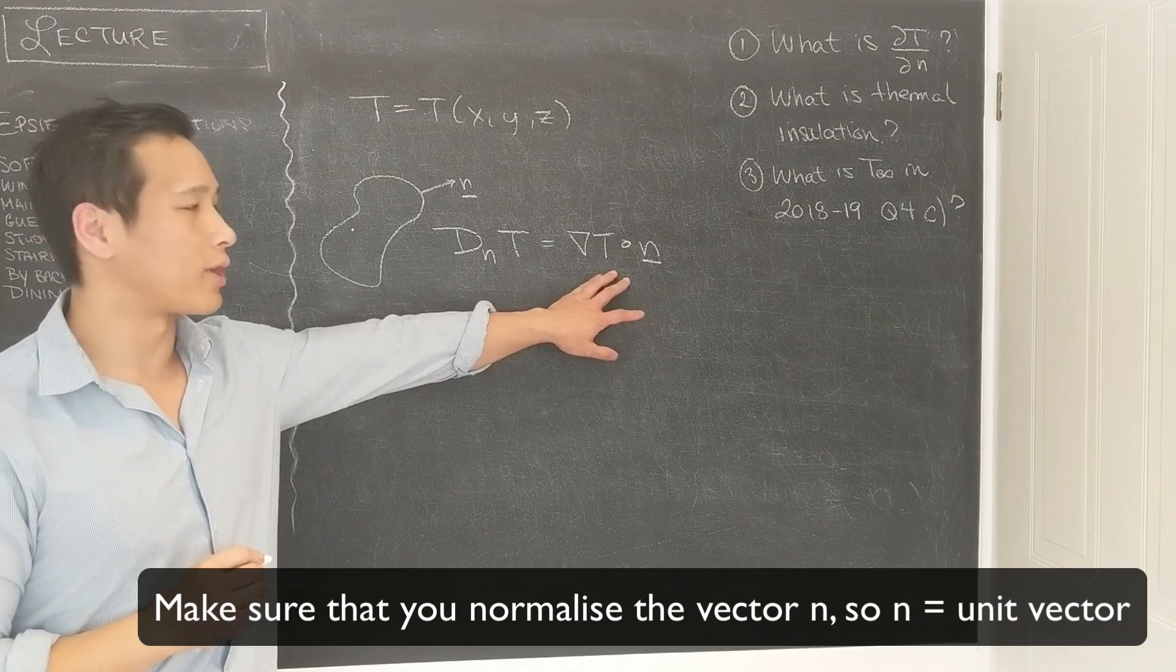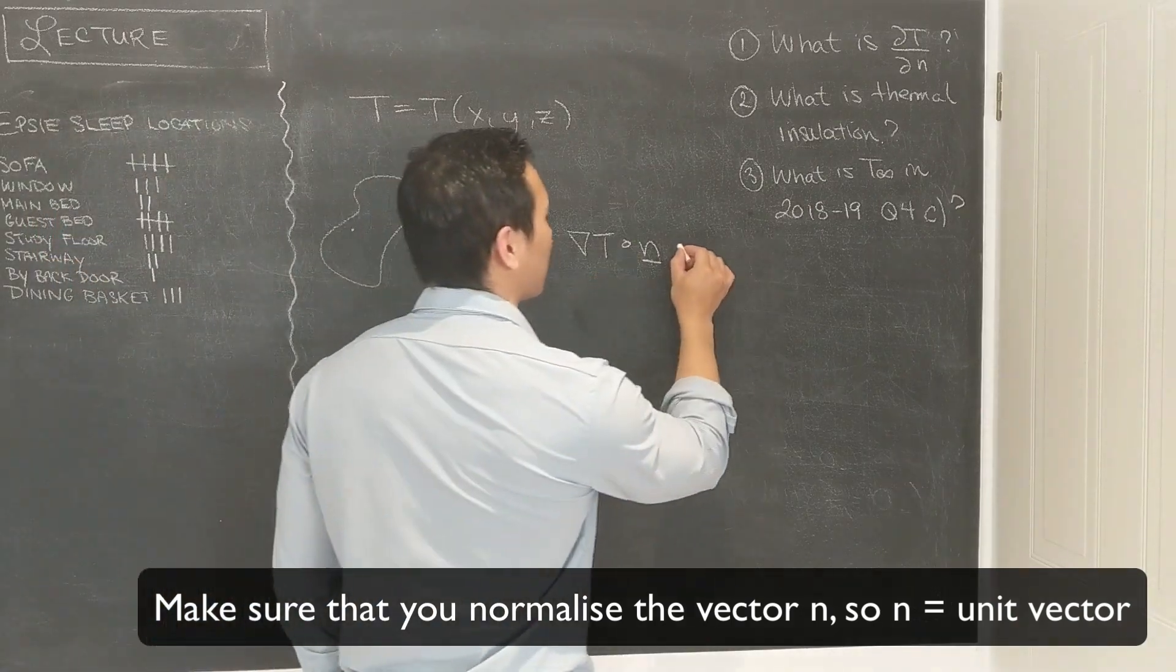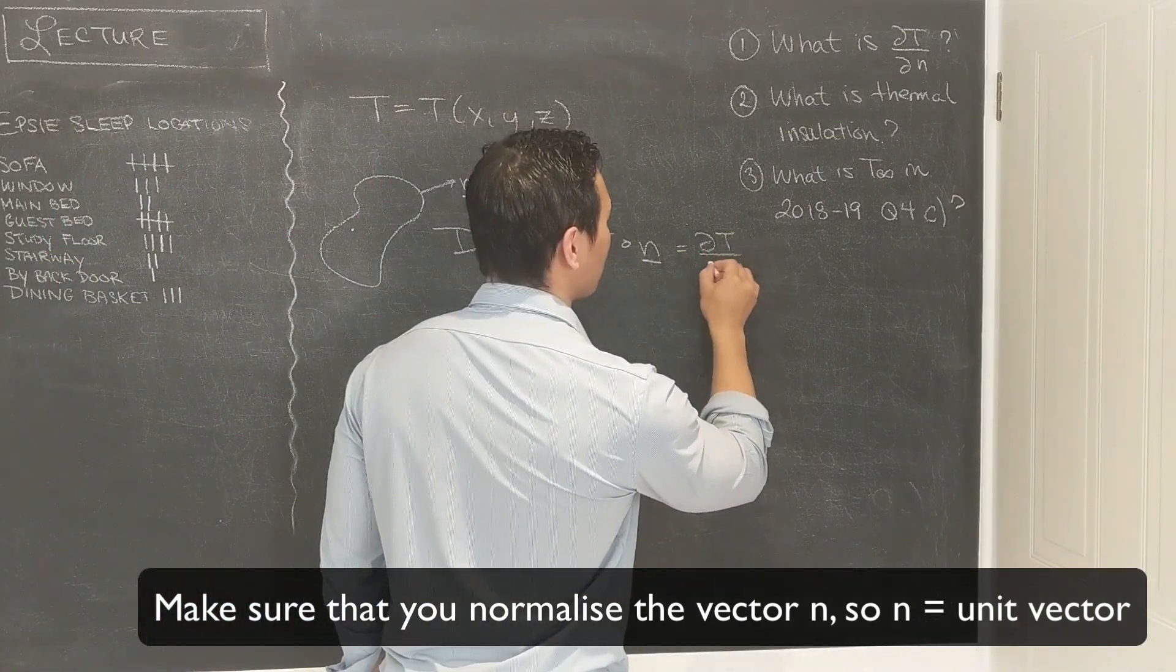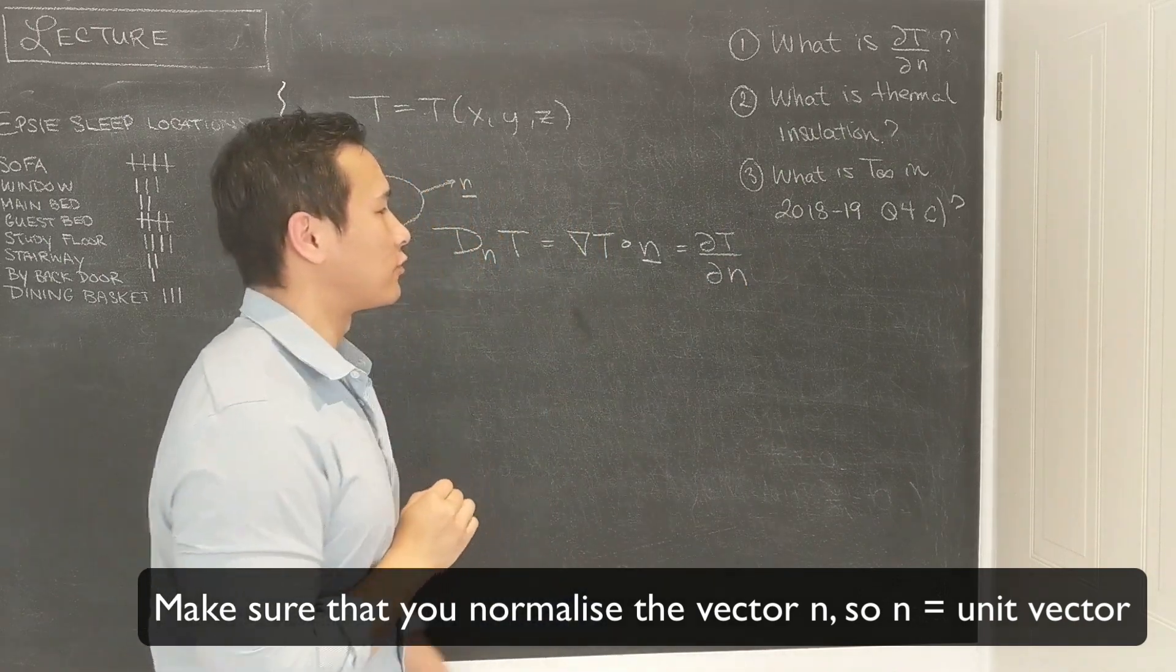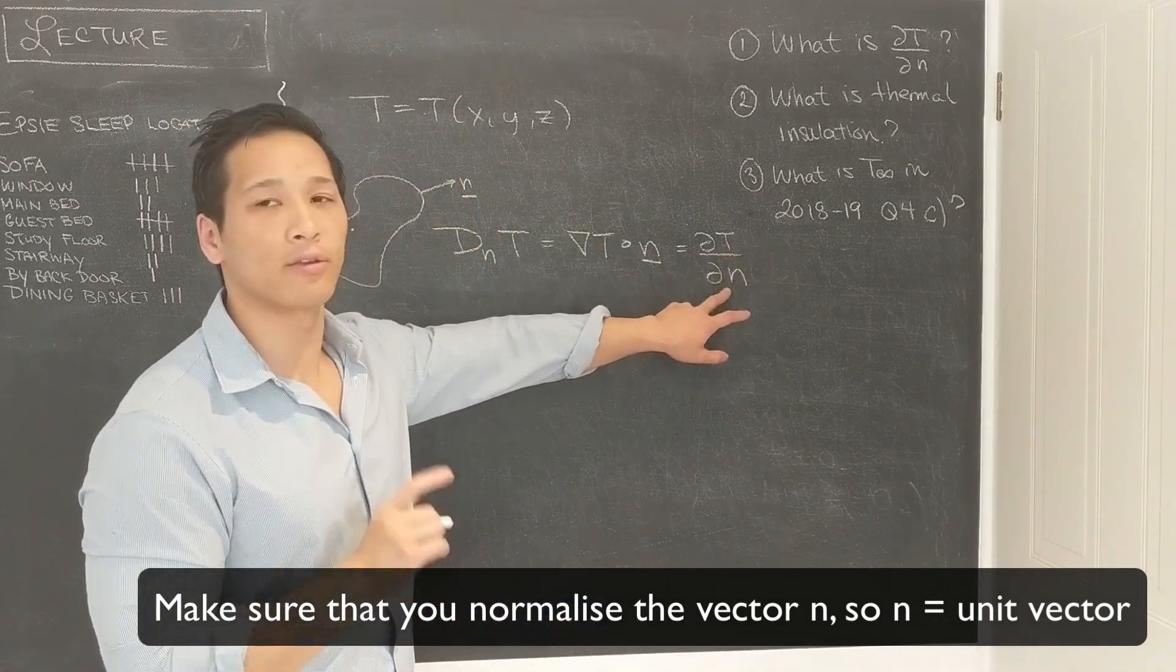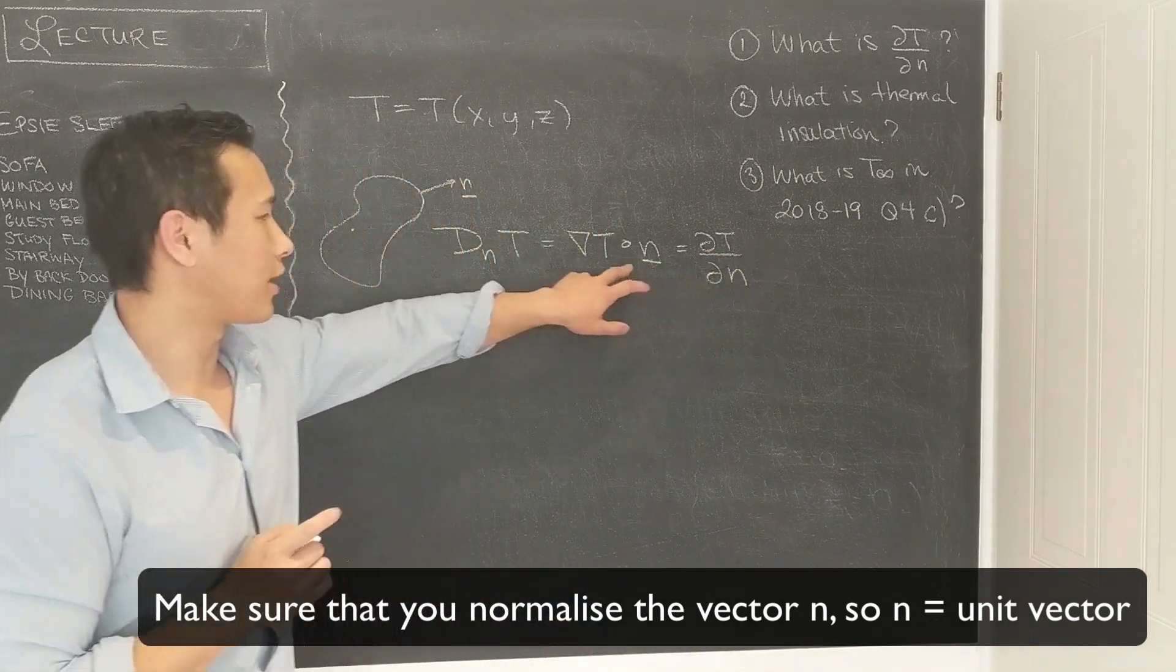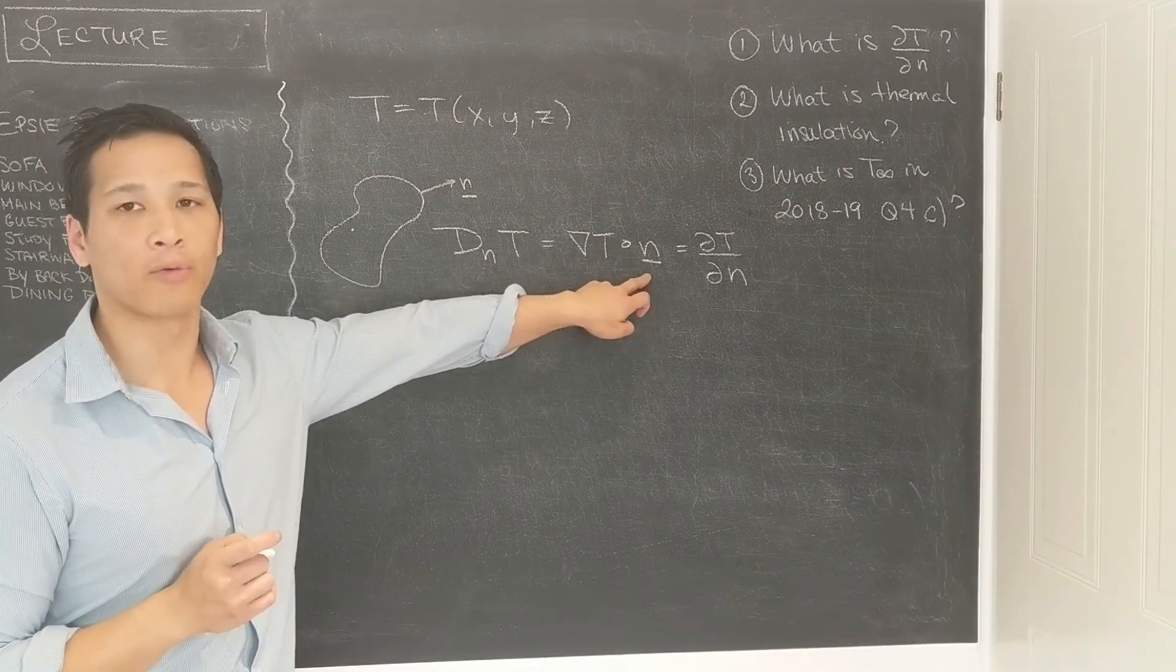And so this is essentially what you write as dT/dn. This dT/dn is just a notation, it's just an item of notation. So whenever you see dT/dn you think normal derivative, you think I find the gradient and I dot that with the normal vector.